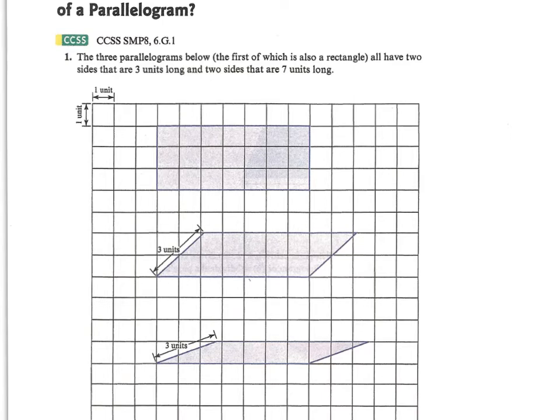All right, so what you've done so far is you marked each of them. This guy is seven wide, he's three tall. This guy is seven units wide, seven units wide.